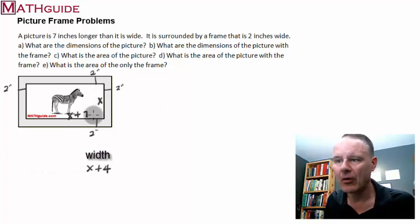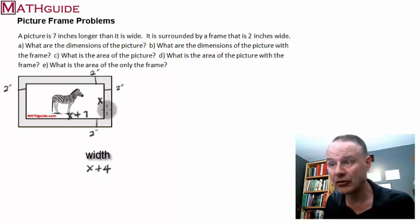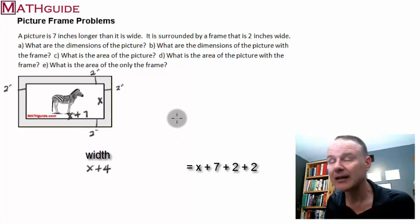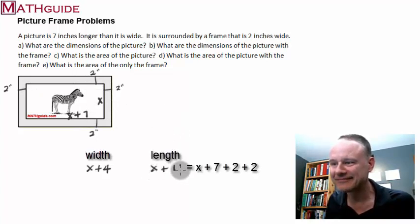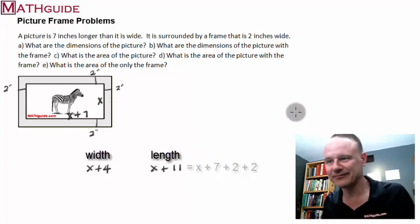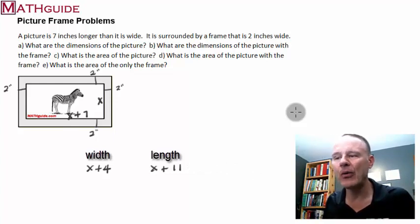Now let's do the length. We know the length of the picture is x plus seven, but I got two inches here, I got two inches there. So it's going to be x plus seven plus two plus two. X plus seven plus two plus two, that's x plus 11. And there you go. So I've got my width and I've got my length of the picture with the frame.